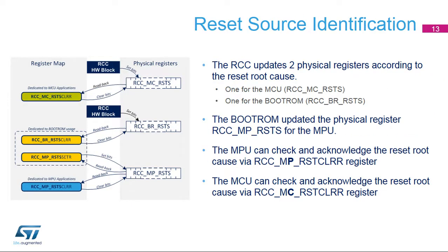The RCC stores the reset root cause into two registers: RCC_MC_RSTS and RCC_BR_RSTS. The boot ROM can check and acknowledge the reset root cause via the RCC_BR_RST_CLRR register. The boot ROM also updates the physical register RCC_MP_RSTS via the RCC_MP_RST_SETR register. The MPU can check and acknowledge the reset root cause via the RCC_MR_RST_CLRR register.